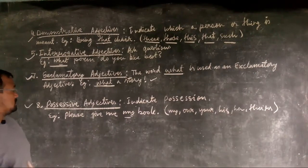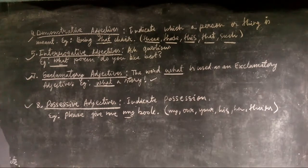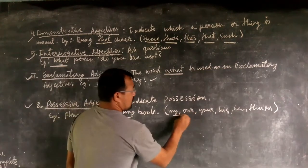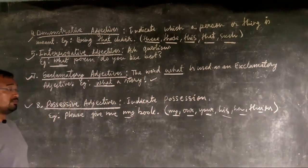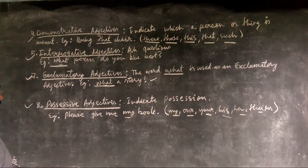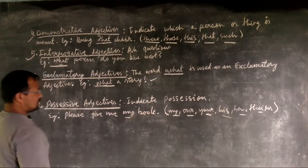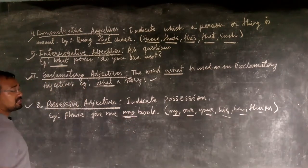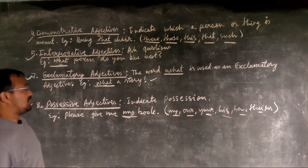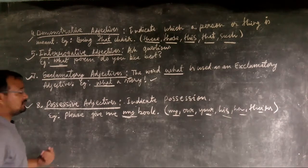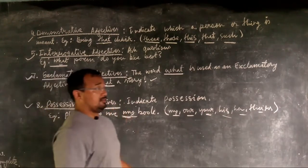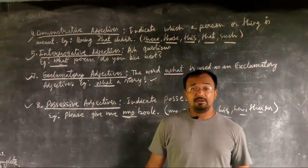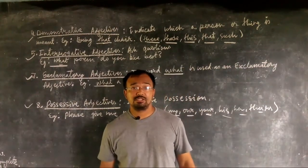The last type is the possessive adjective. As I taught in the pronoun chapter, possessive means showing your belongings. Words like my, our, your, his, her, and theirs are possessive adjectives. For example, 'Please give me my book' — the word 'my' indicates that the book belongs to someone, so this is a possessive adjective.